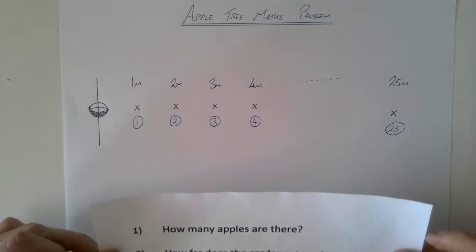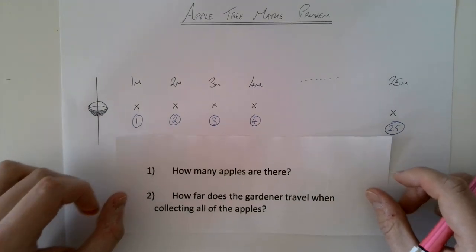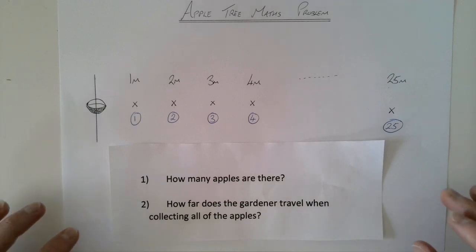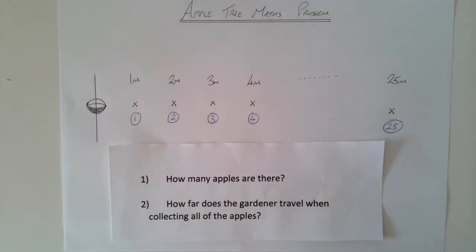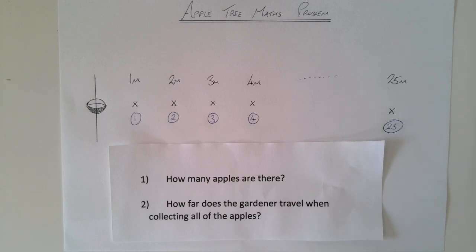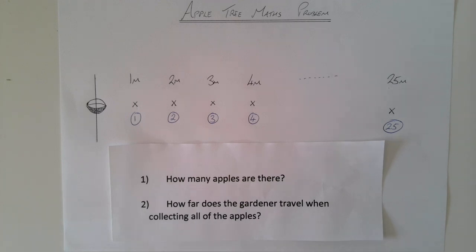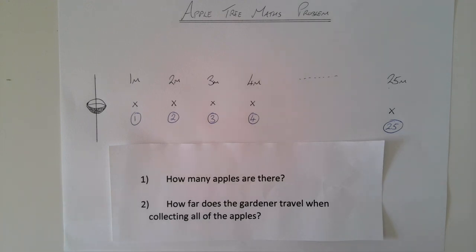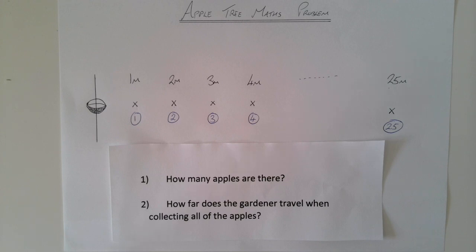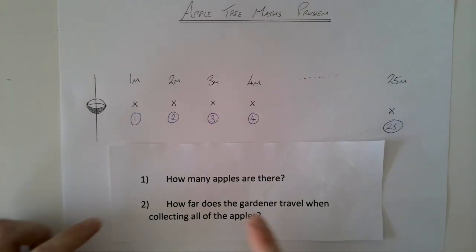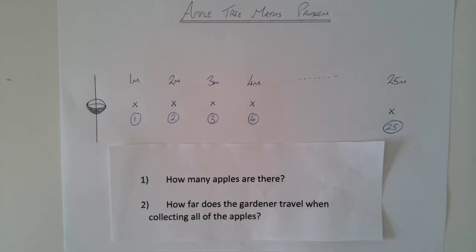Here are the two questions for this scenario. First: how many apples are there altogether across all 25 of the trees? Second: how far does the gardener travel when collecting all of the apples? Again, you may want to draw diagrams, write down numbers, or try solving this using algebra — any approach is fine as long as you show your full workings. Pause the video, have a go at these two problems, then restart the video for your final problem of this lesson.